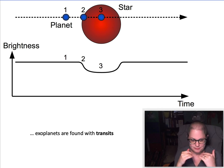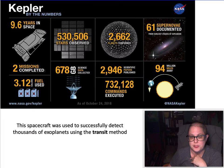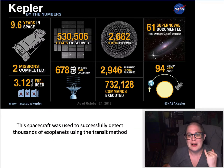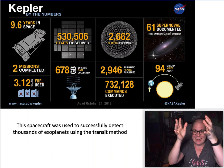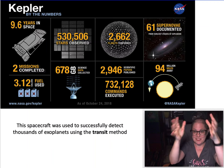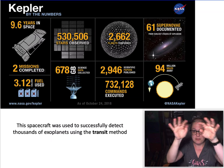So you really need both if you want to get mass and size and then figure out the density of the planet. So these two can work in tandem. The transit method has been used by the Kepler space telescope, which you may have heard of if you follow astronomy news.